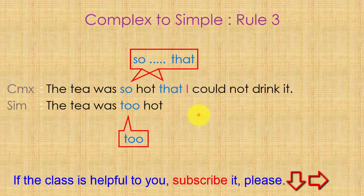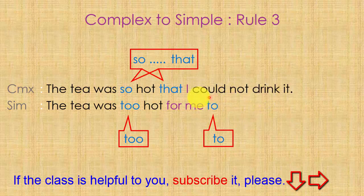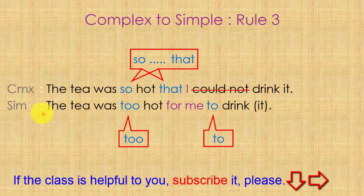Write 'the tea was too hard.' Instead of 'so,' write adverbial 'too.' Now instead of 'that,' write the infinitive sign 'to,' but first change the nominative or subjective form of the subject to its objective form. The objective form of 'I' is 'me,' so before 'me' write the preposition 'for.' Write 'for me to,' then pen through 'could not' and write 'drink.' You can write 'it' in brackets but it is better not to repeat the pronoun.